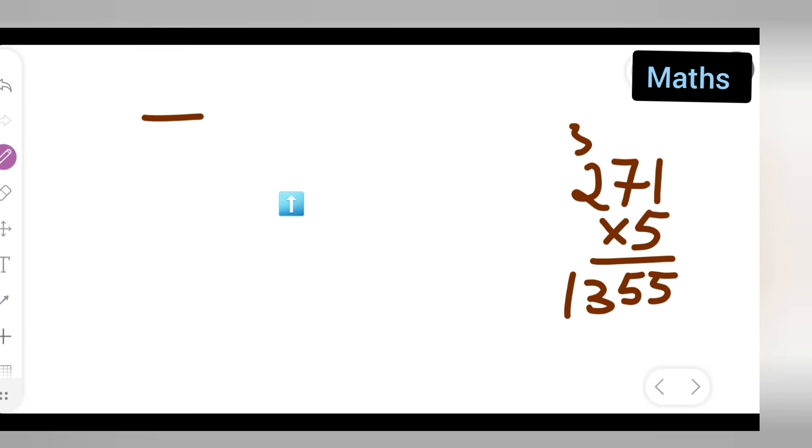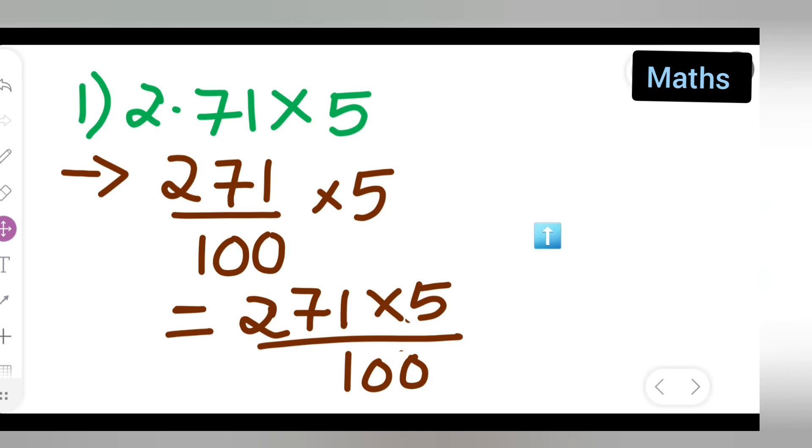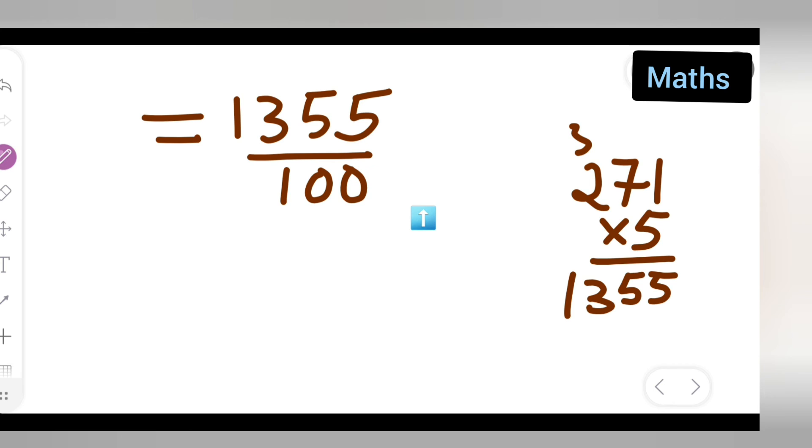This will be the easier way. So 1355 upon 100 you will get. Once you multiply this, what will be your answer? 1355 - now the decimal point will come here.